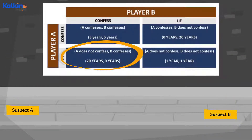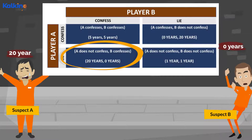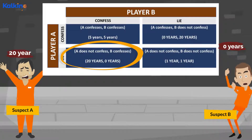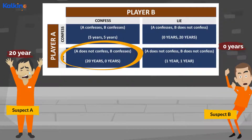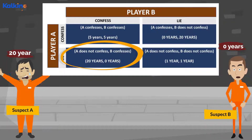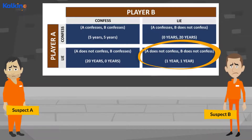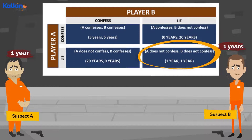Third, A does not confess and B confesses — here B would not face any jail time. However, A would be sentenced to 20 years in jail. And lastly, neither A nor B confesses — here they would both face one year of jail time as they have been caught with weapons.